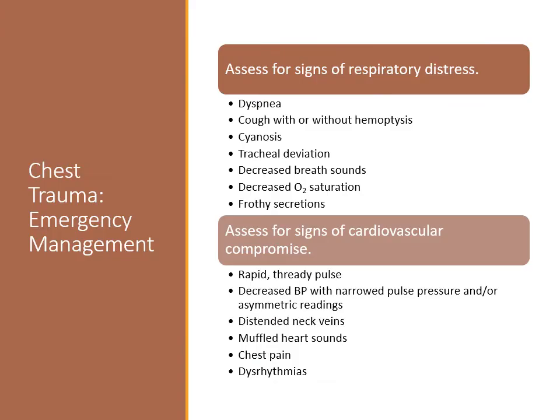Appropriate treatment for chest trauma is based on presentation. Signs of respiratory compromise include dyspnea, respiratory distress, cough with or without hemoptysis, cyanosis of the mouth, face, nail beds, and mucous membranes, tracheal deviation, audible air escaping from the chest wound, decreased breath sounds at the site of injury, decreased O2 saturation, and white or pink-tinged frothy secretions. Chest trauma can also be reflected in cardiac compromise. Signs include rapid thready pulse, decreased blood pressure, narrowed pulse pressure, asymmetrical blood pressure values in the arms, distended neck veins, muffled heart sounds, chest pain, and dysrhythmias.